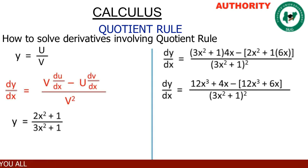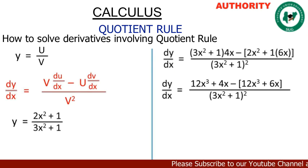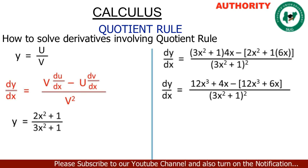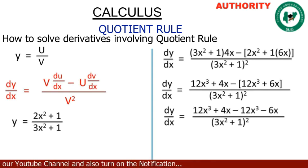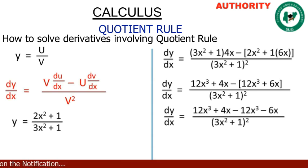Then minus, we open the inner bracket: 6x times 2s² gives us 12s³, and 6x times 1 gives us plus 6x. All over (3s² + 1) raised to power 2. Now let's open the outer bracket: we have minus 12s³ and then minus 6x.